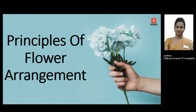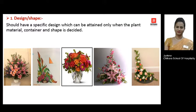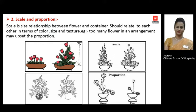The first principle is the design or the shape. Anyone who is going to make a flower arrangement should have a design or a structure in their mind before starting, so that you can collect all the plant material — all the flowers, foliage, and container accordingly. The shape, size, and color of your leaves and flowers depends very much on the design you are going to make. For example, whether you want a triangle shape, a side triangle shape, or a circular flat arrangement — the entire plant material depends on the design and shape chosen.